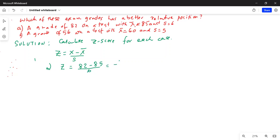So it is (82 - 85) / 6 = -3 / 6 = -0.5. This means the score of 82...